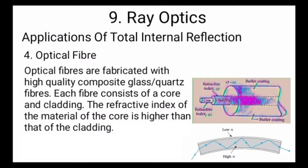The fourth application of total internal reflection is the optical fibre. Optical fibers are fabricated with high quality composite glass or quartz fibers. Each fiber consists of a core and cladding. The refractive index of the material of the core is higher than that of the cladding.